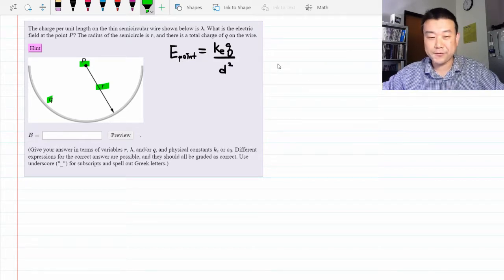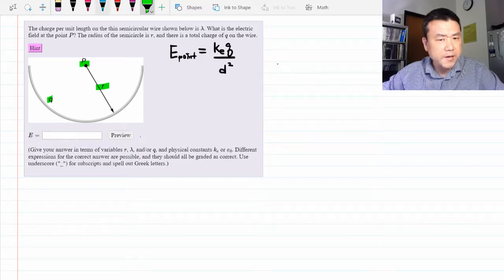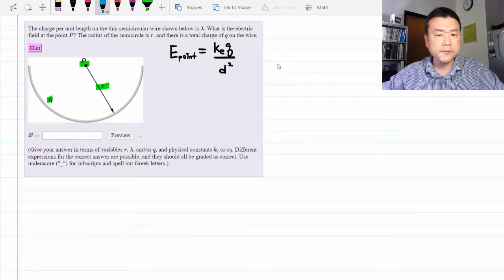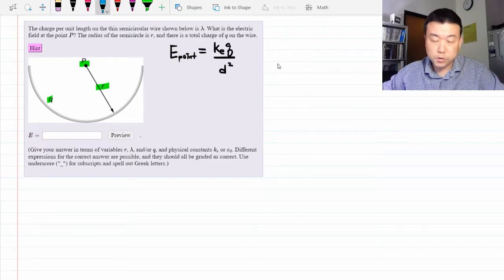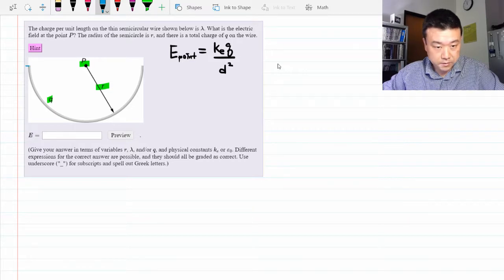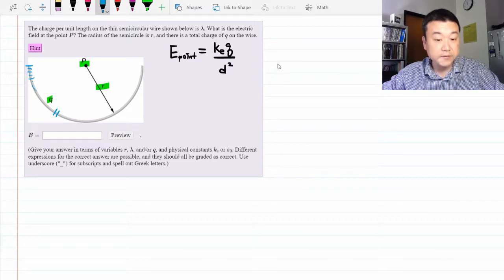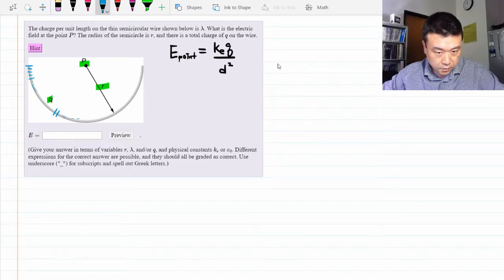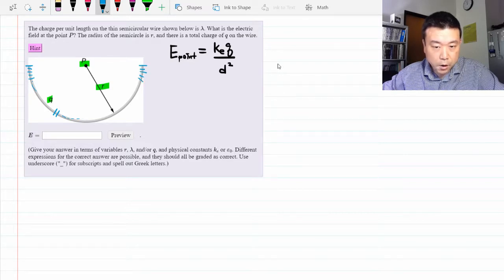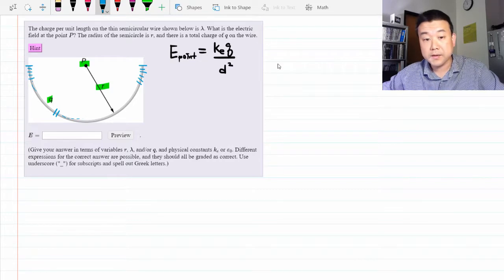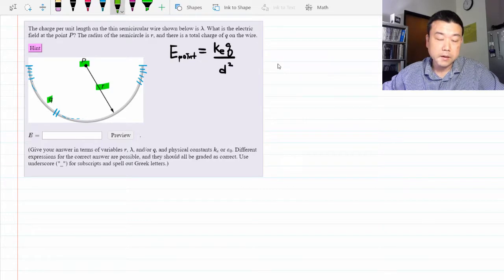Now this is what you have to worry about. You have to worry about the directions. So let me start by imagining breaking up this half ring into tiny little pieces. Starting from the end, I'm going to imagine breaking this up into tiny little pieces. Keep going. And then let's take this as our representative segment eventually. And divide it up here too.